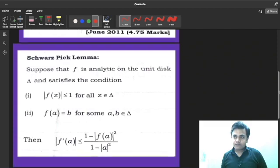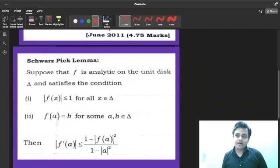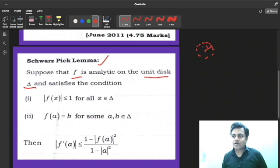Here is Schwarz-Pick Lemma. What this lemma says? F is analytic on the unit disk delta. I mean to say a unit disk means a disk of radius 1. Let's take its radius as 1, so this is your unit disk. And F is analytic on this.